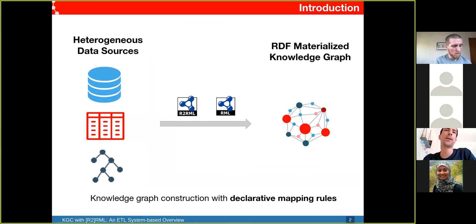The problem we tackle is the construction of knowledge graphs from heterogeneous data sources in non-RDF data formats such as relational databases, CSV files, and JSON files. We rely on declarative mapping rules to generate the RDF. Specifically, we use R2RML, which is the World Wide Web Consortium standard mapping language, and RML, which is a superset that allows generating knowledge graphs from data sources beyond relational databases.